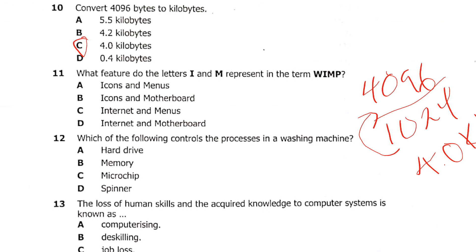Question 11: what do the letters I and M represent in the term WIMP (W-I-M-P)? Is it A: icons and menus, B: icons and motherboard, C: internet and menus, or D: internet and motherboard? The answer is A — icons and menus.